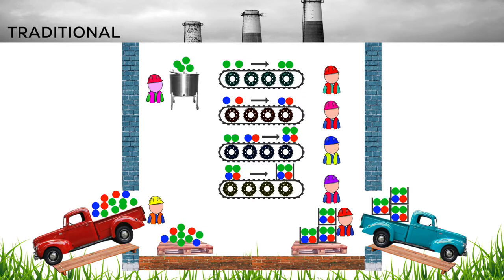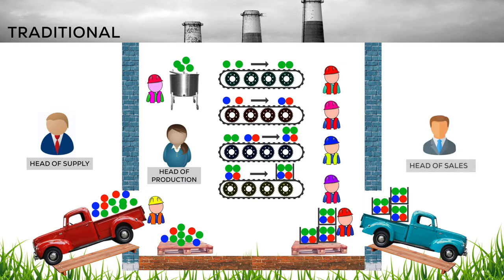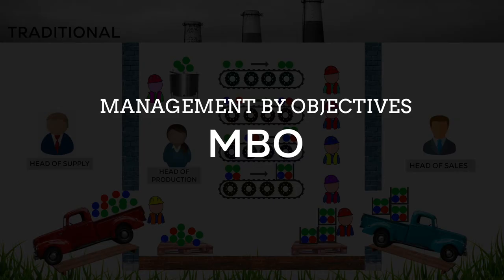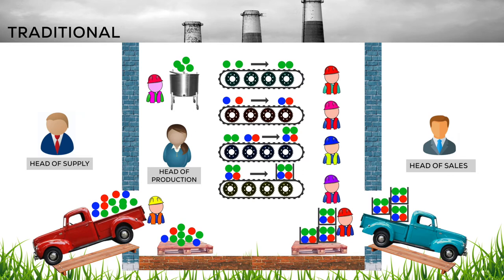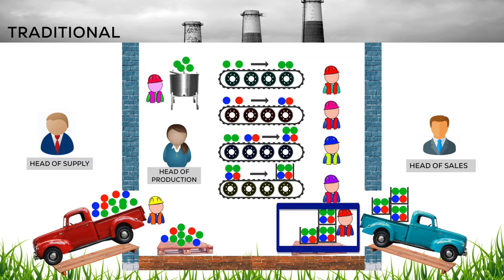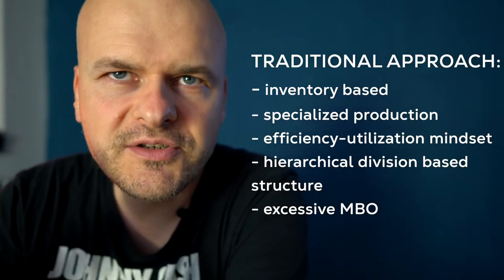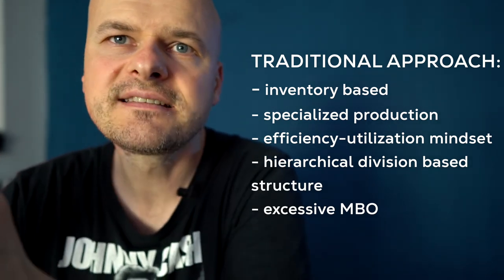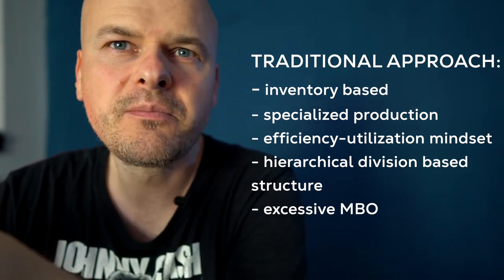From a management structure perspective, we want clear responsibilities, so we might organize the company into three divisions: a head of supply for supplier management and raw materials, a head of production for actual assembly, and a head of sales for taking and shipping orders. This cascading of objectives down the hierarchy — breaking them into smaller, quantifiable objectives at each step — is called management by objective, or MBO. So we now have an efficient factory with clear responsibilities, modern equipment, and a highly specialized workforce. This inventory-based, specialized production efficiency mindset is a traditional way of doing business and can still work well in more static, less competitive markets.